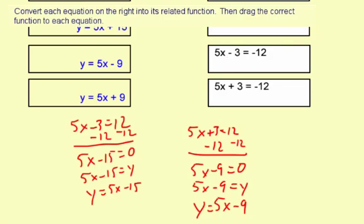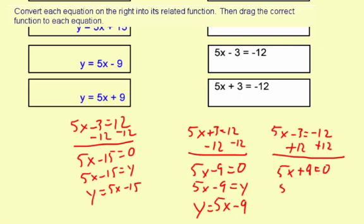The next one, 5x minus 3 equals negative 12. This time you're going to add 12 to both sides. So you get 5x plus 9 equals 0. Substitute the y in for 0. So you get 5x plus 9 equals y. And then proper function form, the y goes on the left. y equals 5x plus 9.